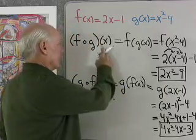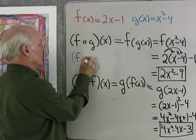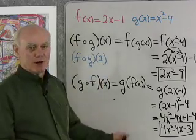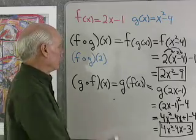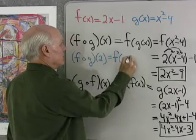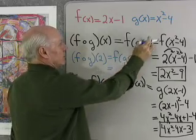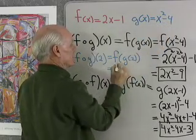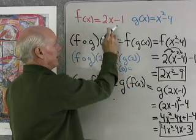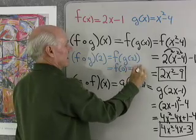What about if I had a specific number instead of x? What if I had f composed with g of 2? Well, I can just go through the whole process and say that's going to be f of g of 2. Then g of 2, I'll put 2 in here, 2 squared is 4 minus 4 is 0. So, that's f of 0, and then f of 0 is 2 times 0, which is 0 minus 1, which is negative 1.